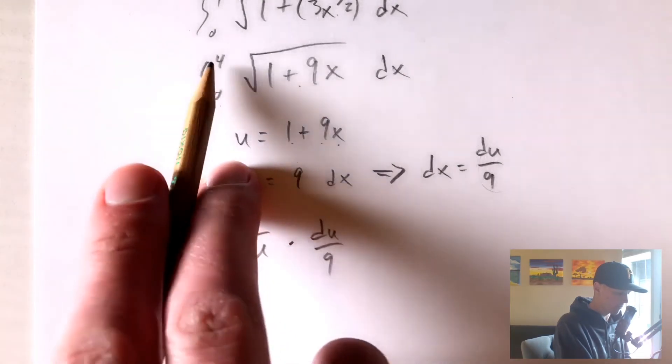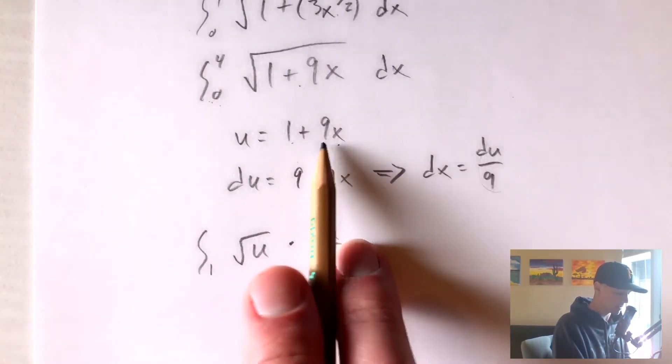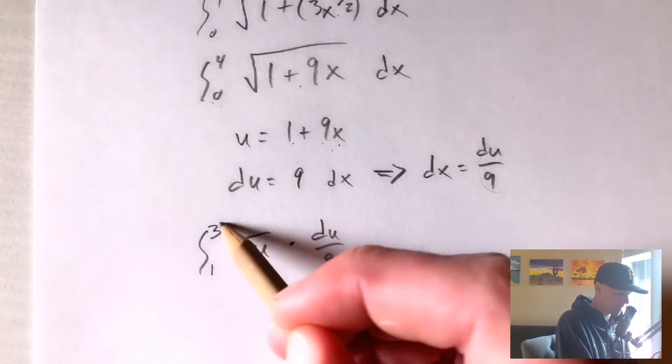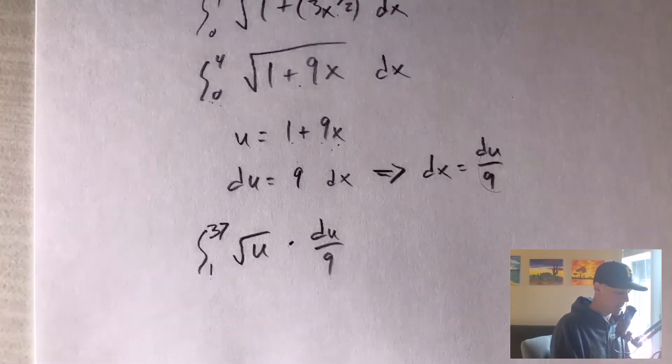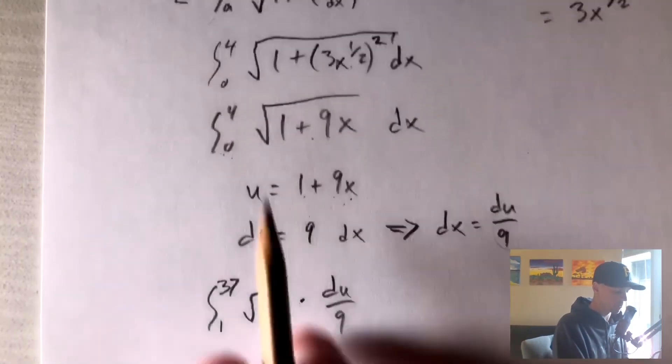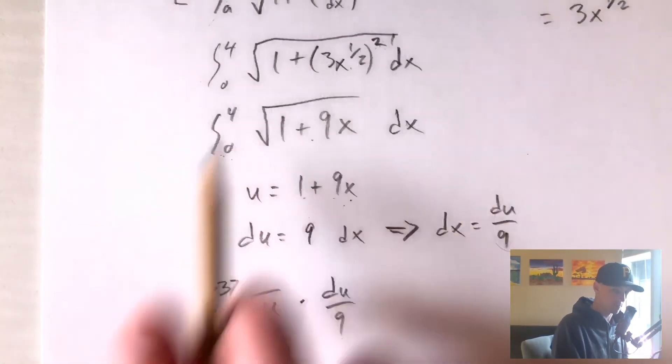So our lower bound on our u function is now going to be 1. And similarly, we want to plug in 4 in for x. So 9 times 4 is going to give us 36, plus 1 is 37. So our upper bound is 37. So now if we integrate this function instead from 1 to 37, that should be equivalent to this function integrated from 0 to 4.